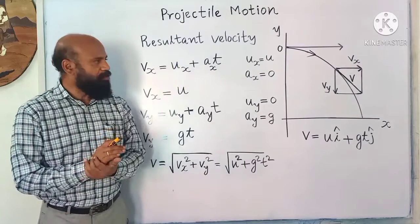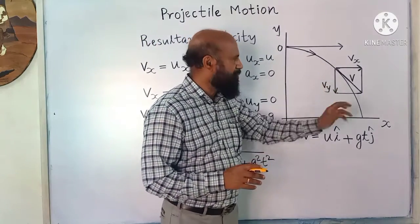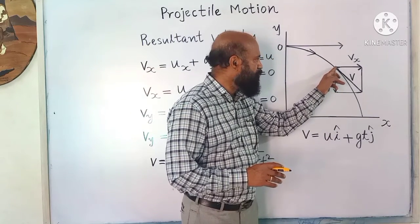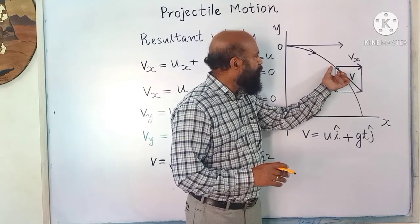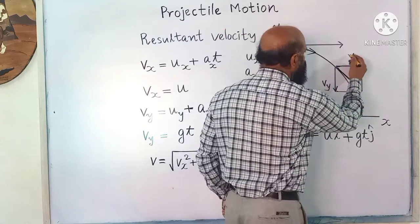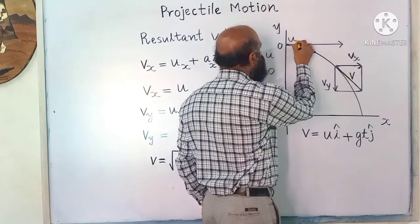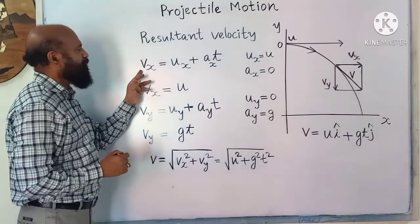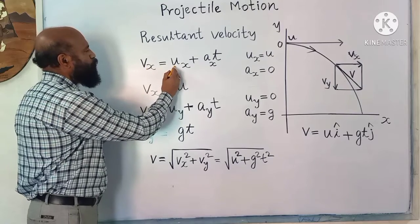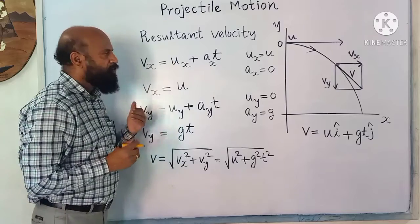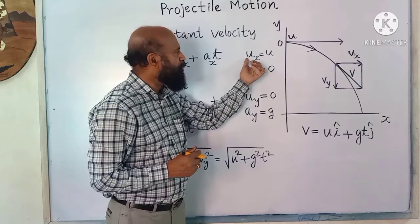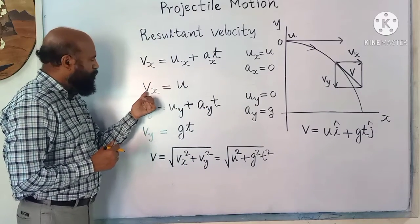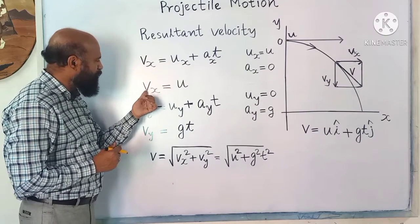Next we will see resultant velocity. At each point on the trajectory there will be a resultant velocity, which is a combination of two velocities. Velocity in the horizontal direction is v_x, and in the vertical direction is v_y. The velocity along the horizontal direction remains constant at u_x. Since there is no acceleration in the horizontal direction (a_x = 0), v_x = u_x, which remains constant and equals the initial velocity u.